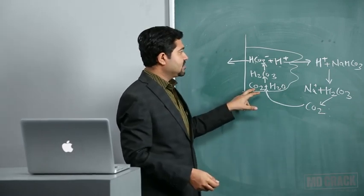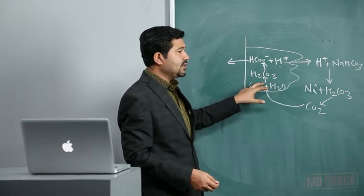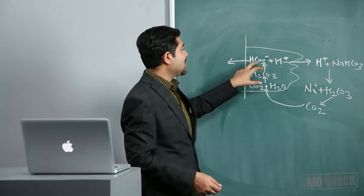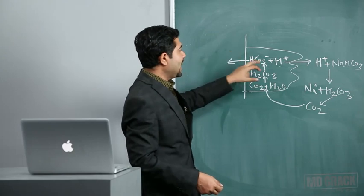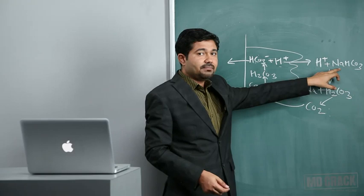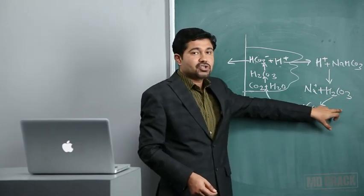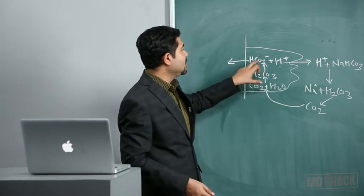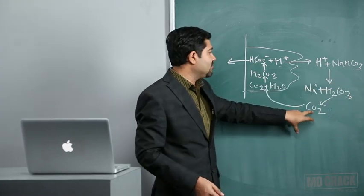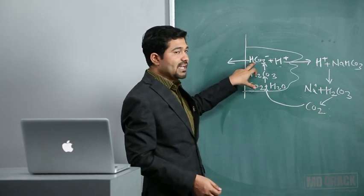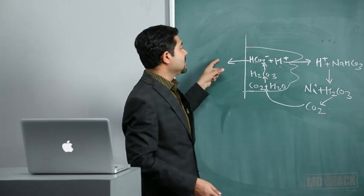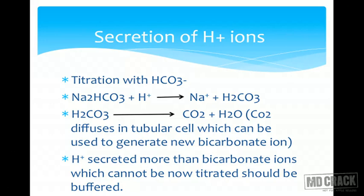Bicarbonates cannot take the transcellular pathway since they are not permeable, so kidneys perform indirect absorption. In the tubular cell, CO2 combines with H2O via carbonic anhydrase to form H2CO3, which dissociates into HCO3- and H+. The HCO3- is absorbed into the interstitium and H+ is secreted into the lumen, where it combines with filtered HCO3- to form H2CO3, which dissociates into CO2 and H2O. This CO2 diffuses back into the cell to form new HCO3-, completing the indirect reabsorption cycle.